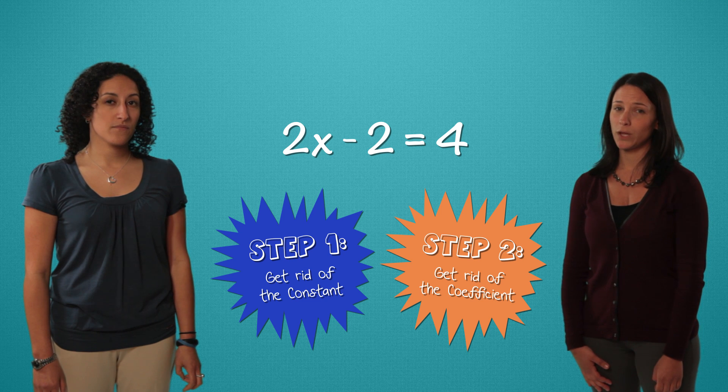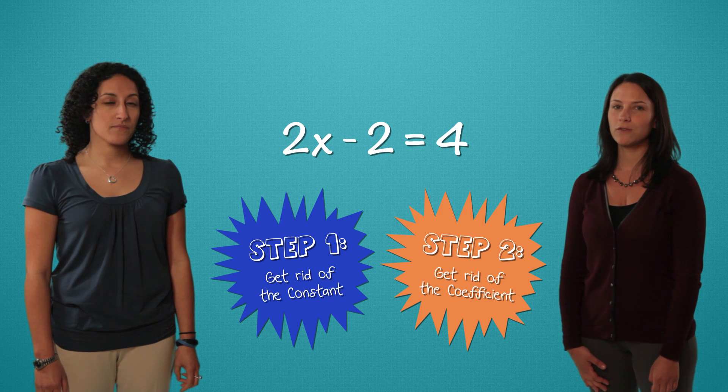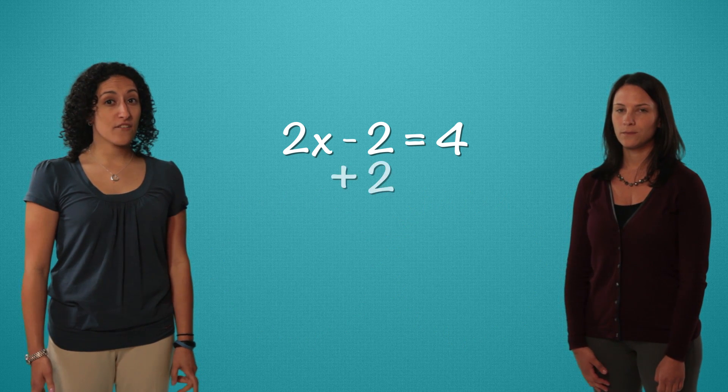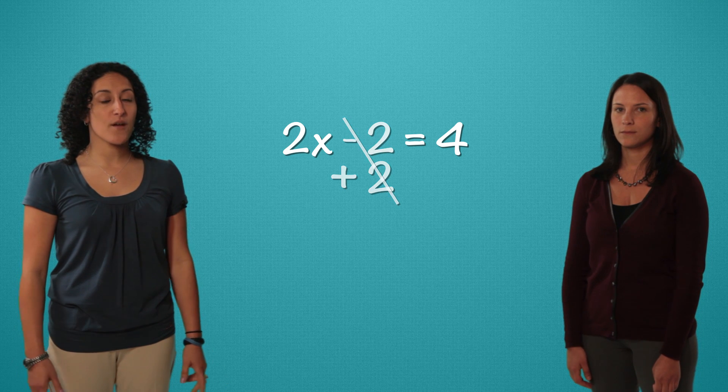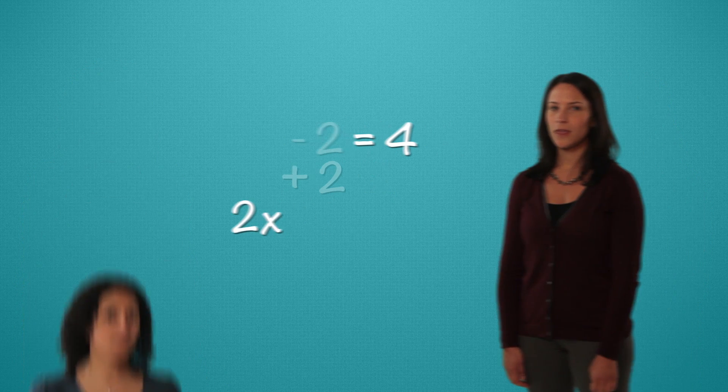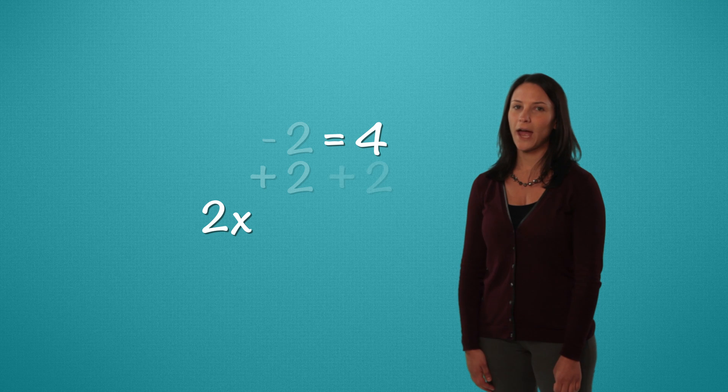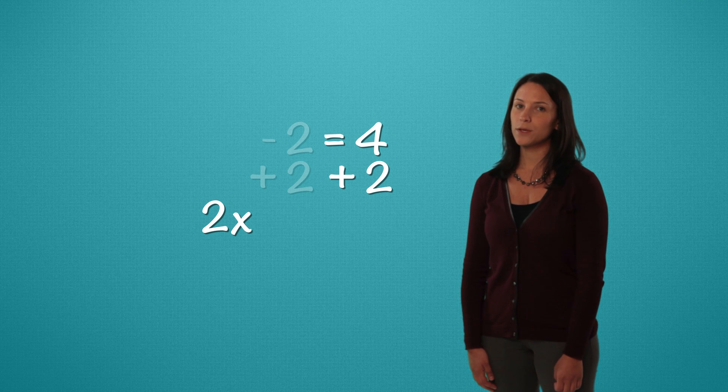The negative 2 is lonely, so we start there. To get rid of a negative, we add. Negative 2 plus 2 cancels out, and we'll bring down this 2x. Then we also keep our sides in balance by adding 2 to the other side. 4 plus 2 equals 6.